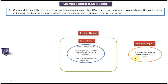Now if you re-read the explanation, it becomes very clear. The Command design pattern is used to encapsulate a request as an object — the command object — and pass it to an invoker. Here you can see the request is encapsulated as a command object, and the whole command object is passed to the invoker, wherein the invoker does not know how to service the request.